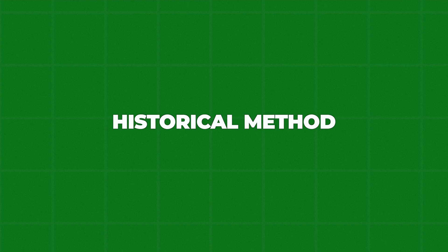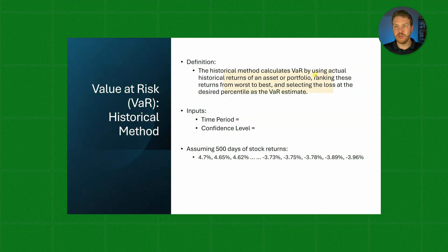Now let's dive into what I believe is the most straightforward method for calculating VaR. The historical method calculates VaR by using actual historical returns of an asset or portfolio, ranking these returns from worst to best, and selecting the loss at the desired percentile as the VaR estimate.